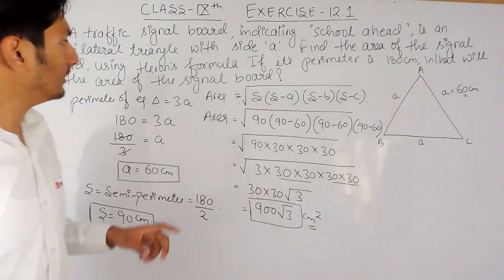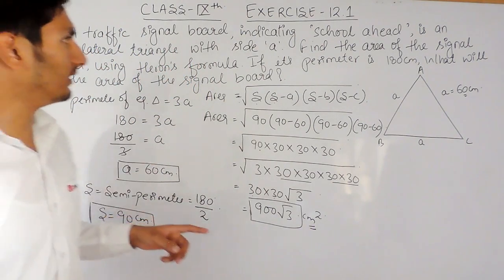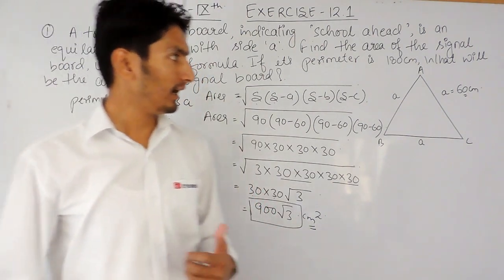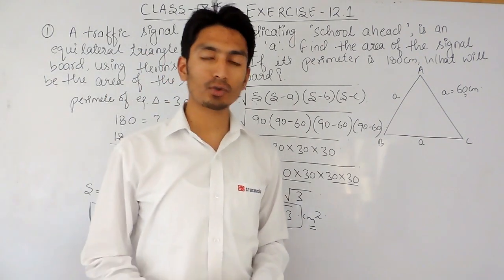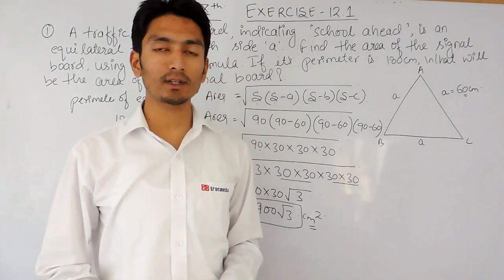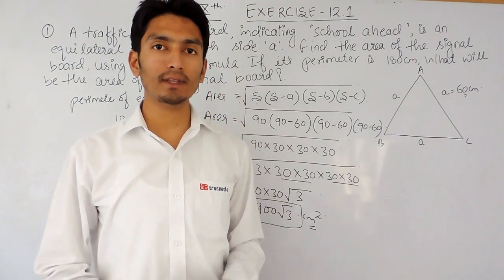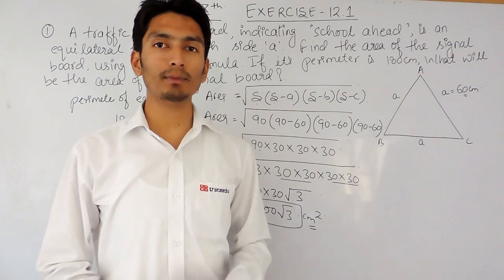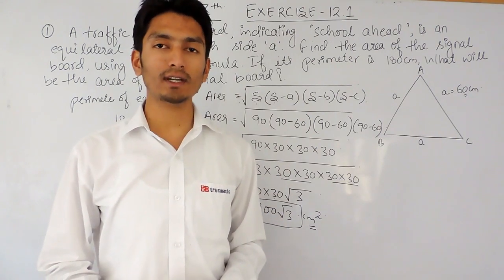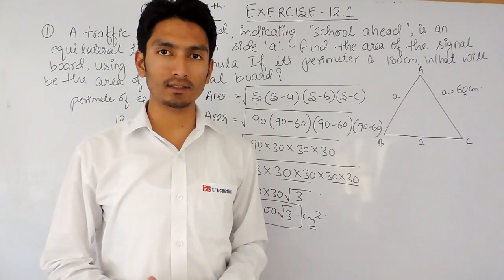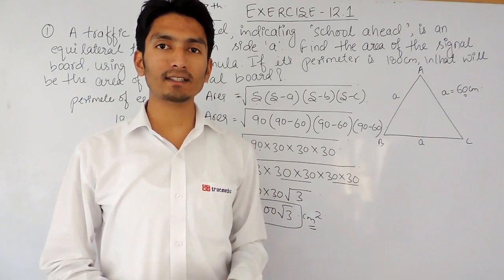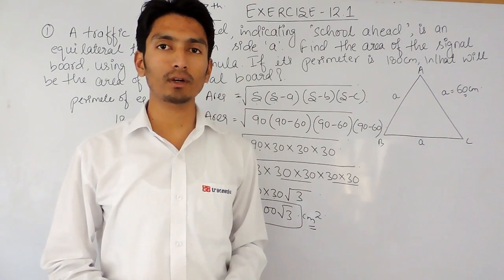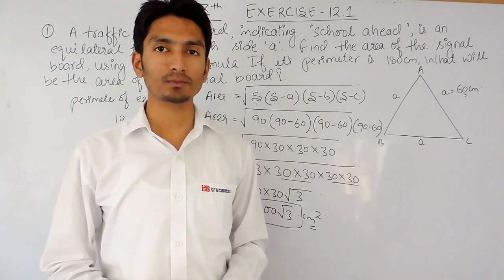So 900√3 cm² is the area for this first question. I hope you understood how to solve this. If you liked this video, please subscribe to our channel. If you have any problem in maths, you can directly contact us — the phone number, email address, and WhatsApp number are given below in the description. Thank you.